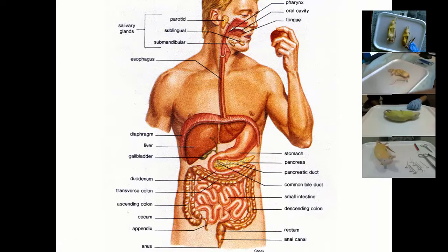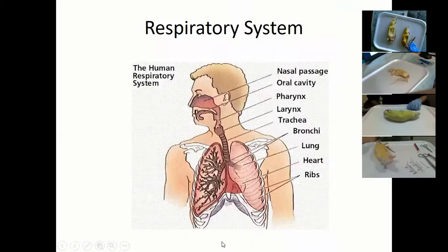You will be able to see all these things that I just said — the mouth, the esophagus, the stomach, the liver, the pancreas, the small intestine, the large intestine, the rectum, and the anus.